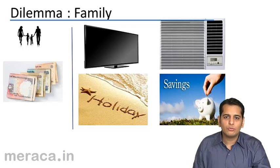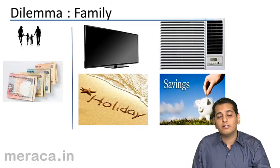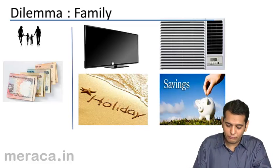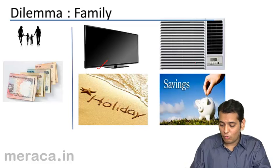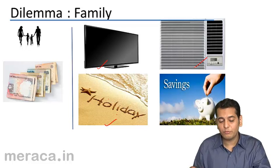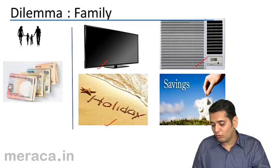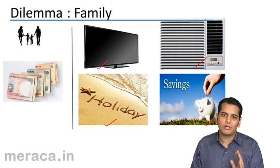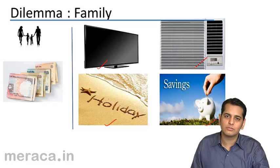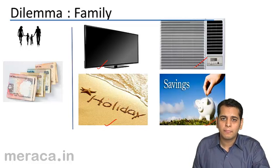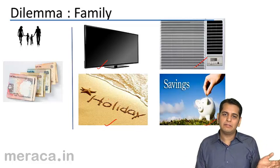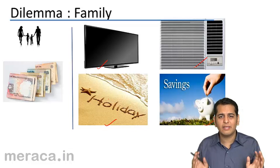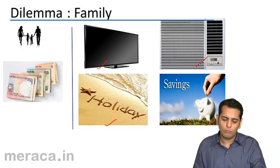Or it may want to go for a different choice altogether — it may want to save. It entirely depends on the family whether it wants to go for a TV, an AC, a holiday, or save the entire amount. Whatever choice it makes, it has to cut down on the other expenses — the other expenses get ruled out. This is how a family balances its unlimited wants and limited resources. Again, it's striking a balance between resources and wants.